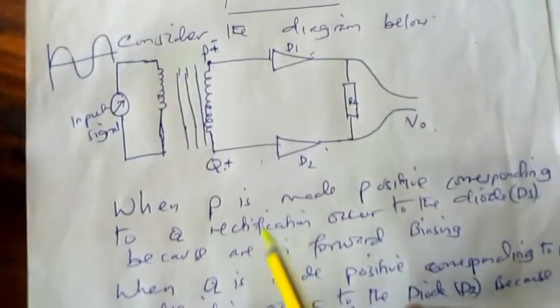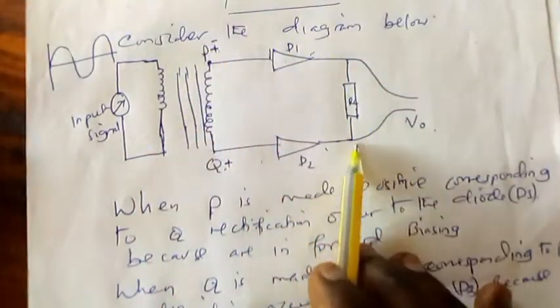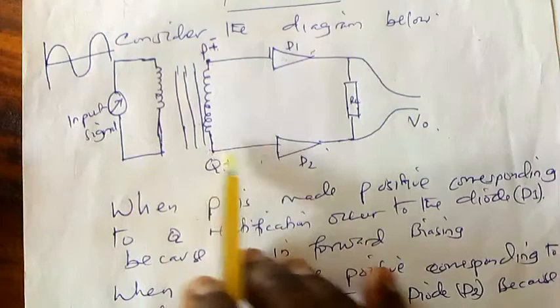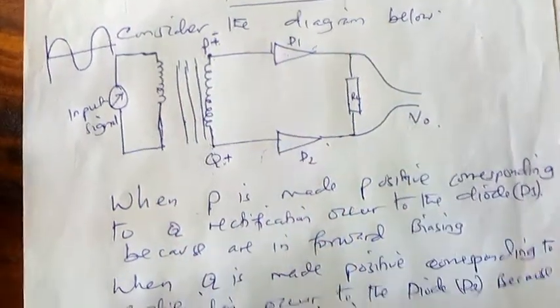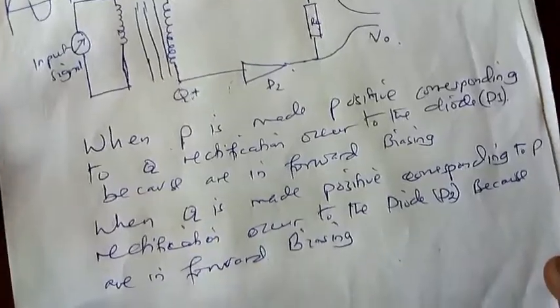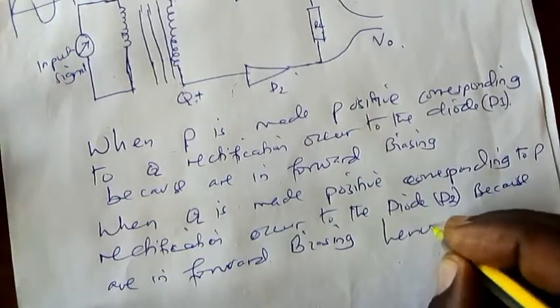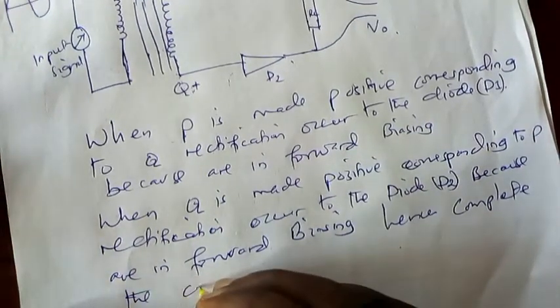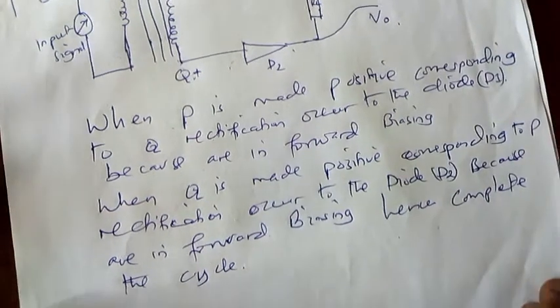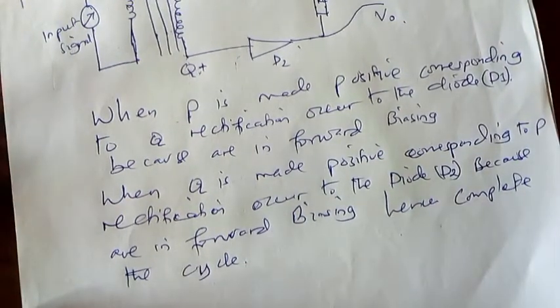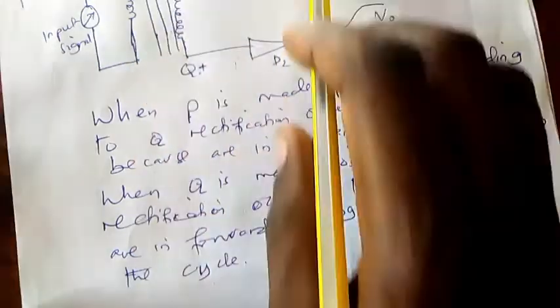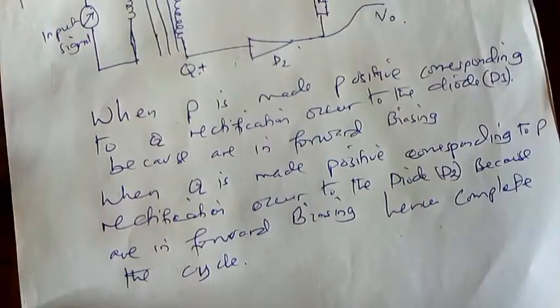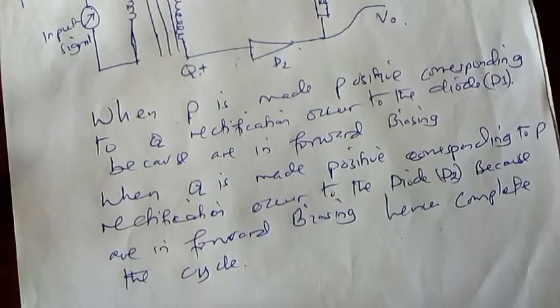So now, we say that rectification happens through forward biasing. After taking positive here and negative there, current passed and was accepted as half. Then we took this one to be positive and this one to be negative, current was accepted as another half. Add the two halves and we complete one full cycle. That's what we call full wave rectification. If it had accepted only half, we would call it half wave rectification. But since it accepted half and then another half, when you combine them you get one complete cycle. That's what we call full wave rectification.